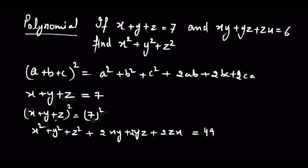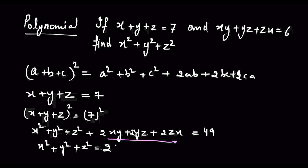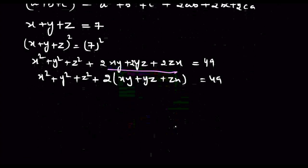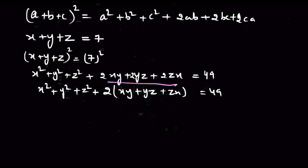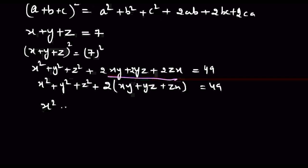क्योंकि 2 हमारा common निकलेगा। देखिए x square plus y square plus z square, अगर 2 हमने common निकाला तो xy plus yz plus zx equal to 49। xy, yz, zx की value है हमारे पास 6। तो x square plus y square plus z square plus 2 into 6 equal to 49।